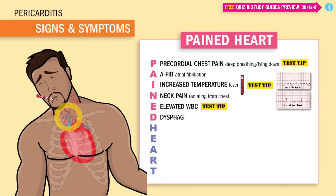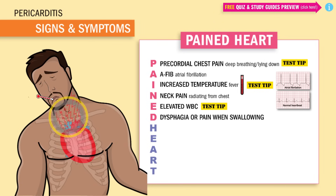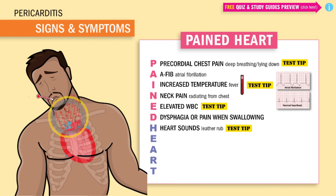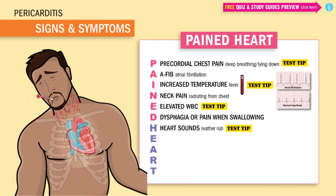D is for dysphagia, or pain when swallowing, due to the heart sac enlargement putting pressure on the chest. H is for heart sounds — another test tip. It sounds sort of like this: the pericardium is so inflamed that it makes a weird noise when it beats. This is called pericardial friction rub.